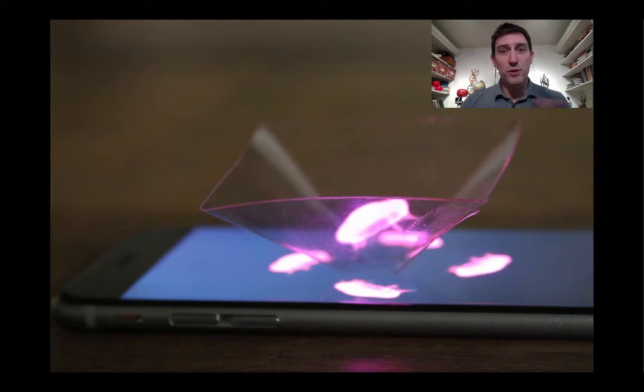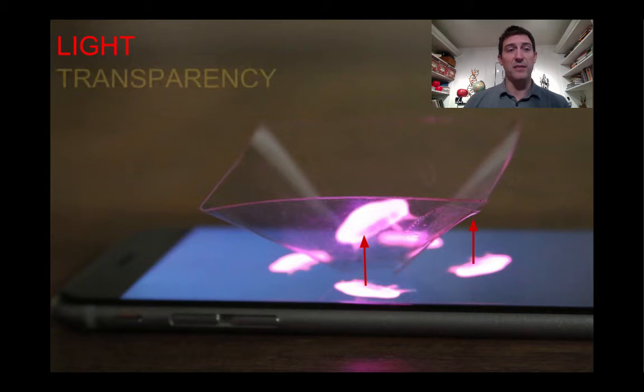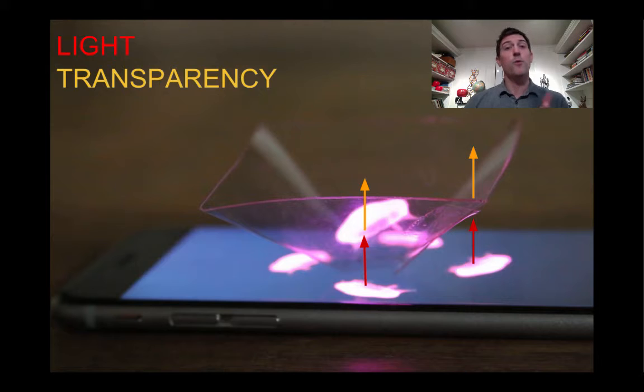Now, just some quick terms about what's actually causing this to happen. I've drawn on here that light is beaming its way up from the screen and it's touching the plastic. It's also going through the plastic, and that's because the plastic exhibits the properties of transparency—it's transparent, we can see through it.